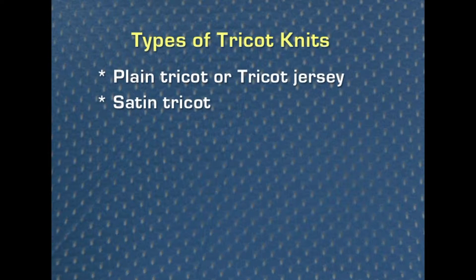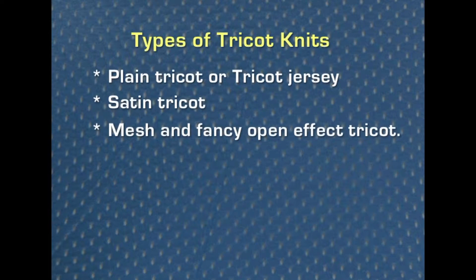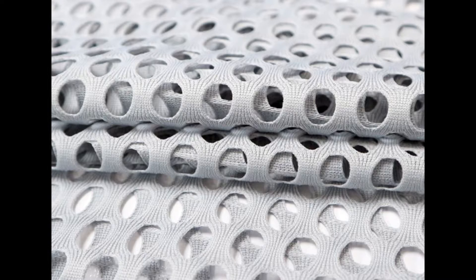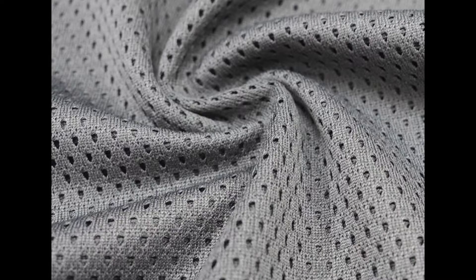Satin tricot is a variation of plain tricot and is made with long underlaps of up to 6 wales wide, which provides an extremely smooth hand. The fabric does not curl and has excellent stability in the width. Mesh and fancy open effect tricot: the mesh or open effects are produced either by eliminating needles and yarns at certain points or by threading certain guides with 2 or 3 yarns. The fabrics are generally of fine gauge and light to medium weight.